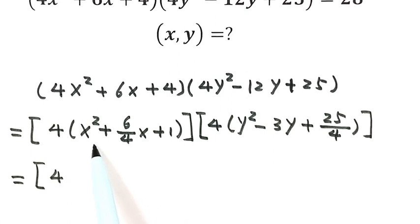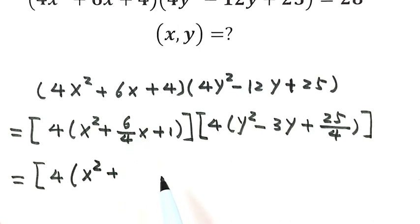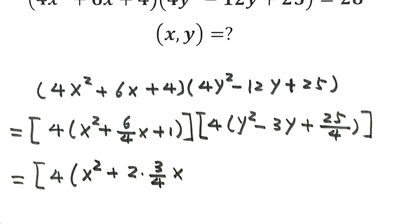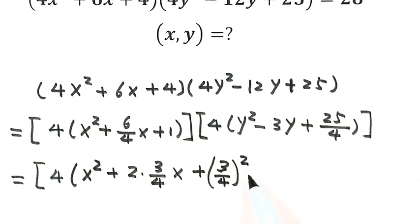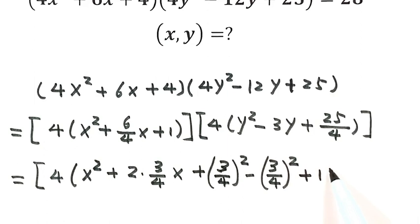Next we're going to try to make a complete square inside the parentheses. For the x part, we have x squared, and for the 6/4 coefficient we break it up as 2 times 3/4, so we put x plus 3/4. To complete the square we need to add (3/4) squared, then subtract the same thing to keep balance, and we still have the plus 1.